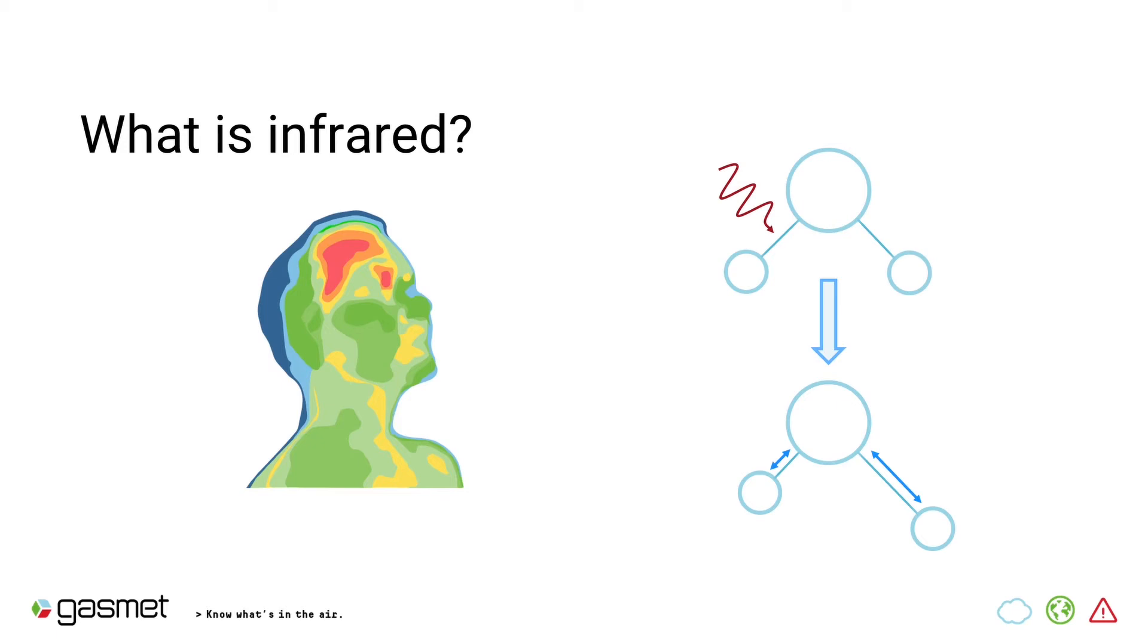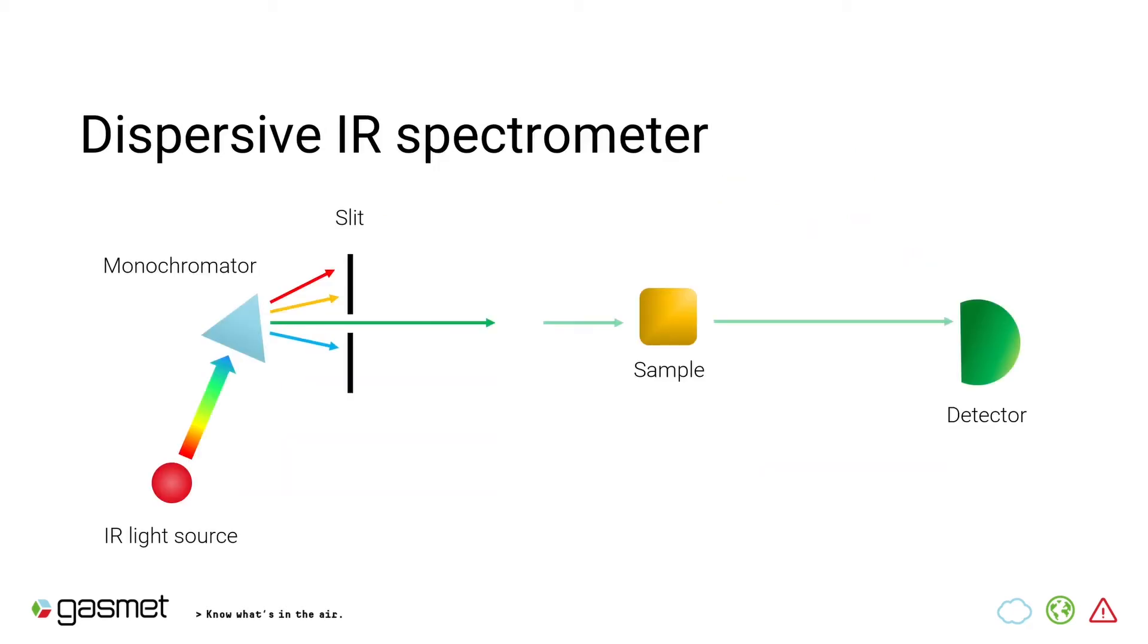The energy and the wavelength of the radiation required depends on the atoms bonded, the bond type, and the type of vibration. Now, how those are affected is beyond this webinar. For us, it's enough to know that light corresponding to the molecule will be absorbed and other light will just go through.